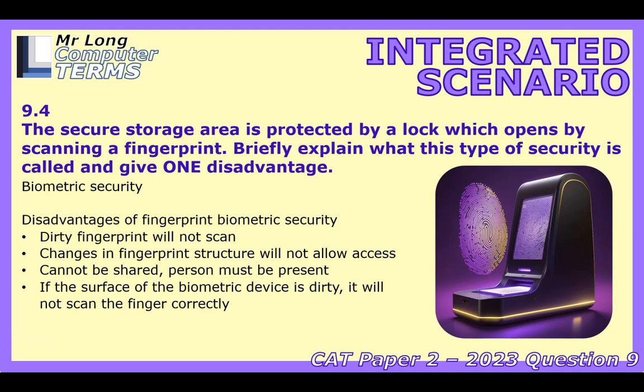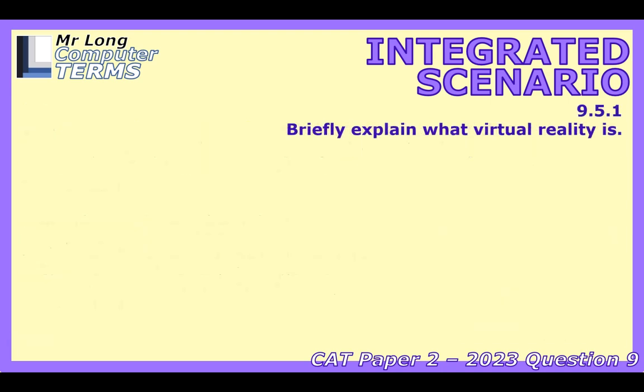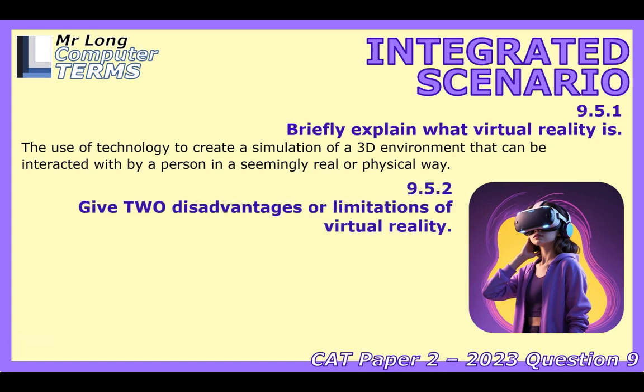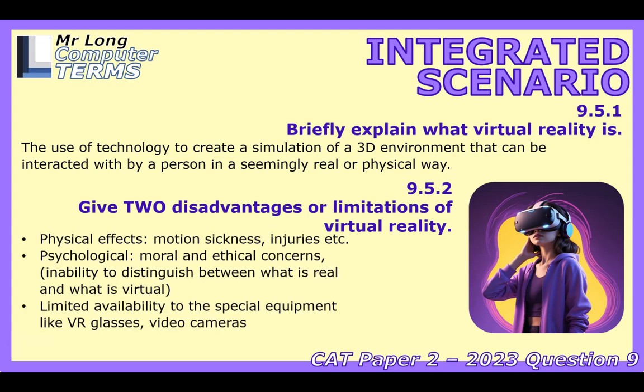Let's jump into virtual reality. Question 9.5.1 asks for a brief explanation of VR. The definition: technology that creates a 3D environment simulation for seemingly real interaction — it tricks your brain into thinking you're somewhere else. A headset blocks out the real world and shows a computer-generated one, making you feel immersed. Question 9.5.2 asks for two disadvantages. One is motion sickness — a disconnect between what your eyes see and what your body feels. Your eyes see movement in the virtual world, but your inner ear says you're sitting still, causing nausea.